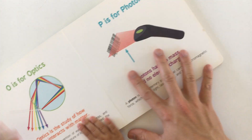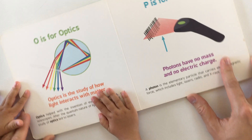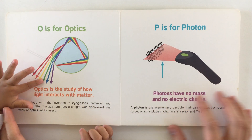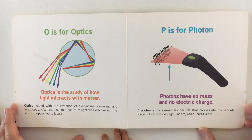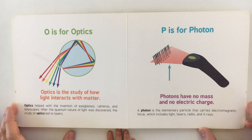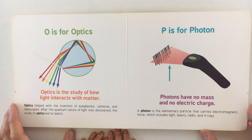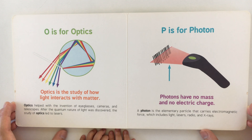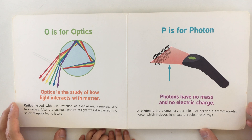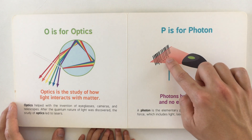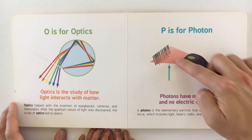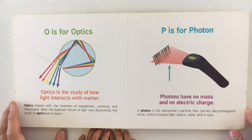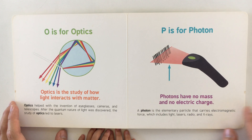O is for optics. Look at the rainbow! Optics is the study of how light interacts with matter. Optics helped with the invention of eyeglasses, cameras, and telescopes. After the quantum nature of light was discovered, the study of optics led to lasers.